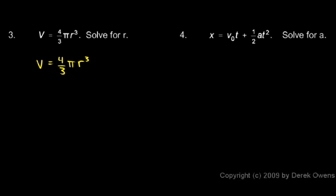Now we need to solve for r, so we need to first isolate this r cubed, which means I need to get rid of all this other stuff. So what I'm going to do is multiply both sides by 3 over 4 pi. And of course I have to do the same thing on both sides.